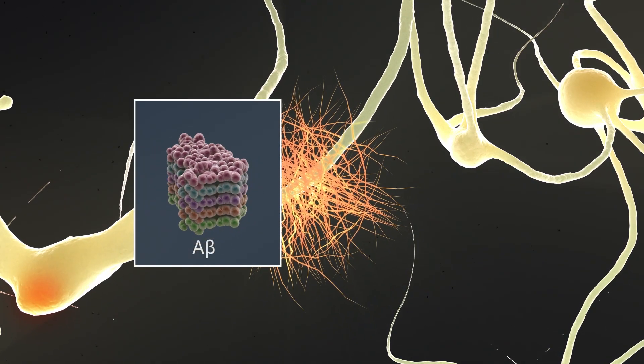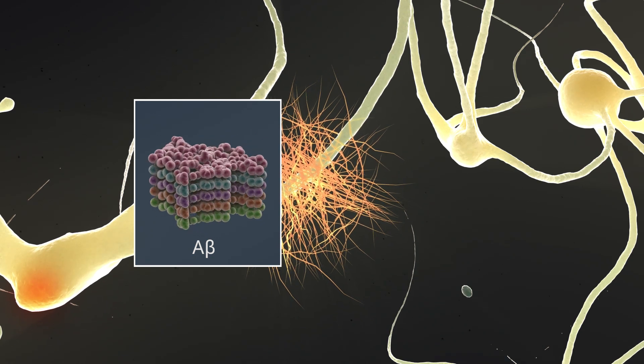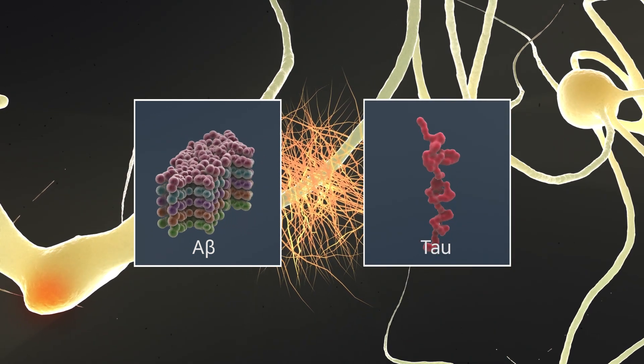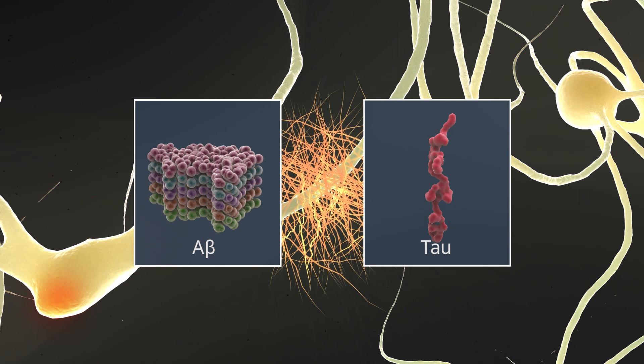Thus far, scientists have been focusing on beta-amyloid and tau proteins, which are toxic proteins known as hallmarks of Alzheimer's disease.